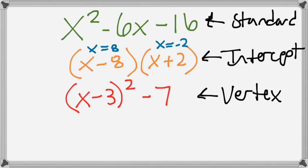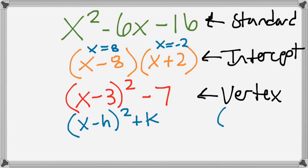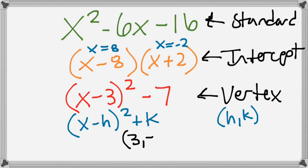Typically in vertex form, it's written like x minus h plus k, and the vertex is h and k. You might wonder why we use h and k since x and y already have a place inside the equation. In this particular problem — the red equation, x minus 3 squared minus 7 — it tells me that the vertex is (3, negative 7).